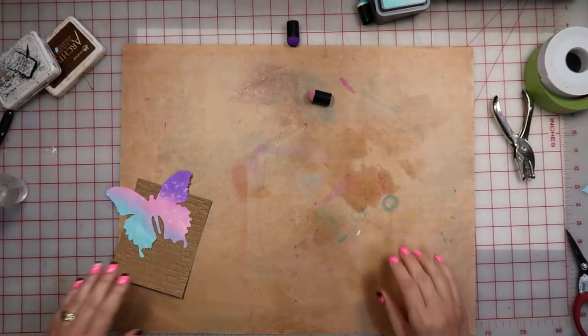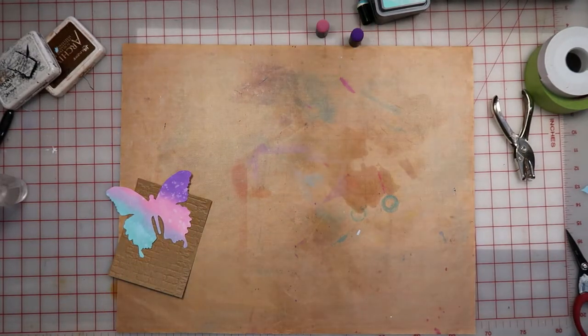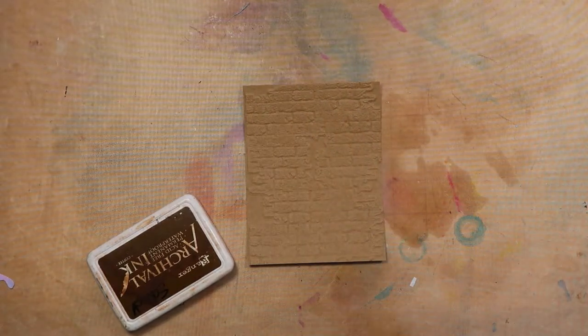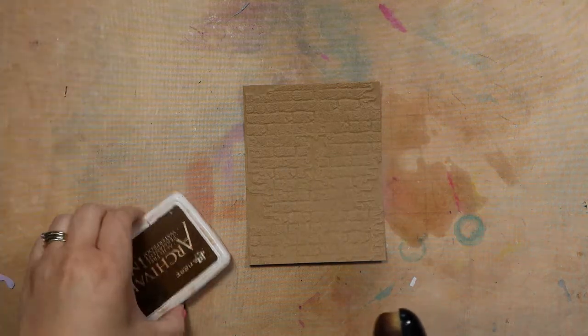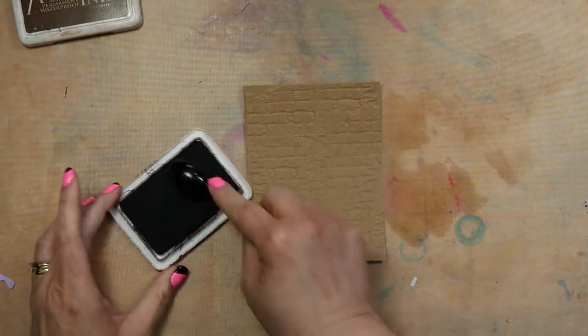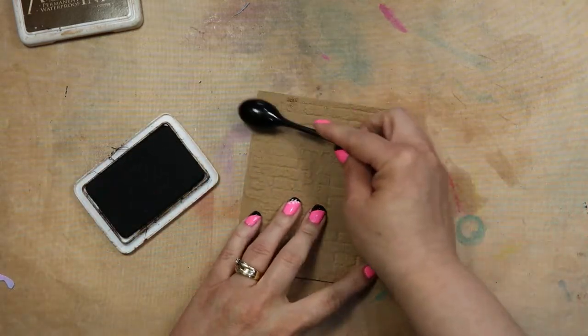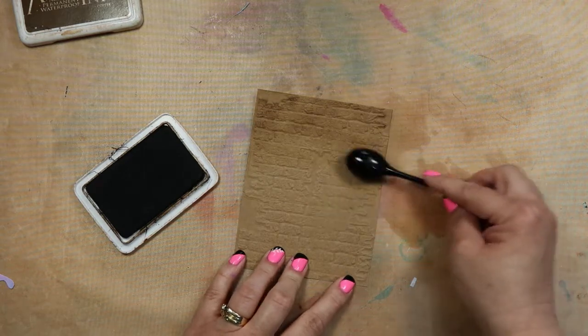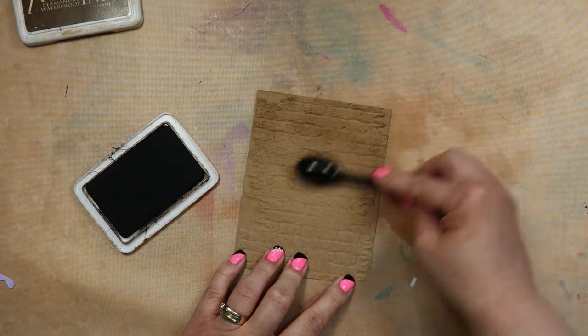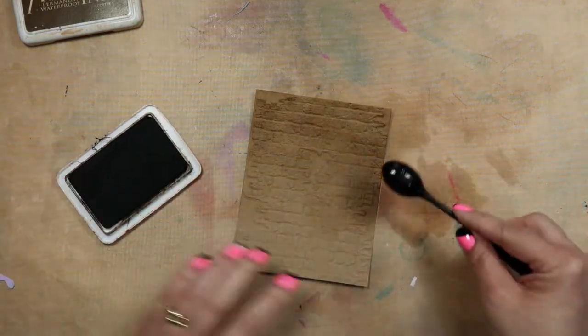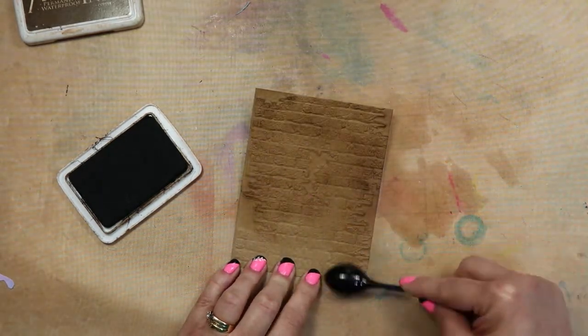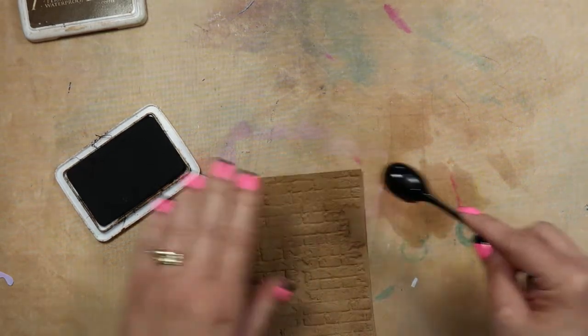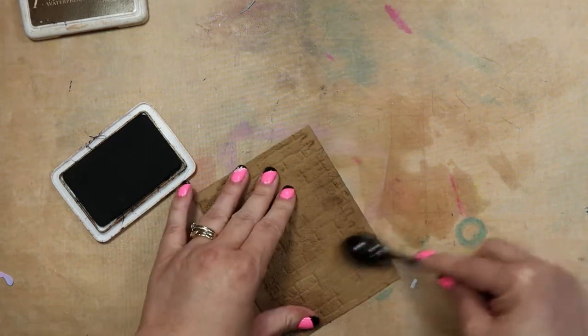All right, so I want to bring out that brick texture a little bit more. I'm going to bring you back in so you can see what's going on here. I'm going to use my little brayer blending brush and I'm going to use the archival ink in Coffee. And I'm just lightly going to come in and rub that on the brick wall. That's just going to bring it out a little bit more, give it a little bit more life.